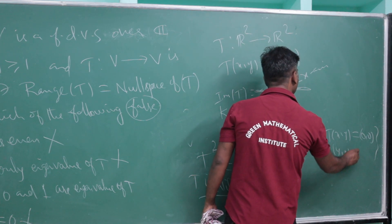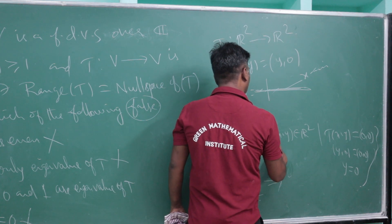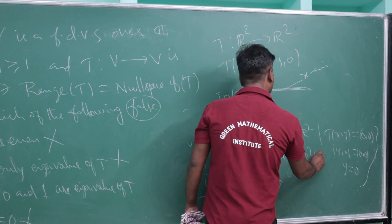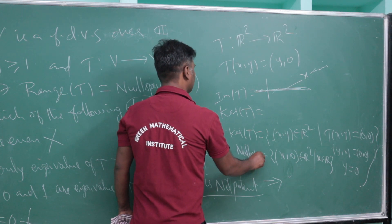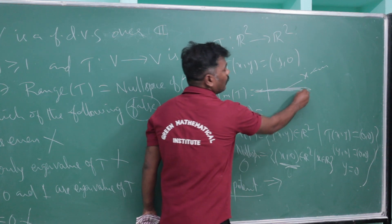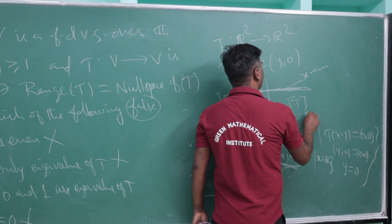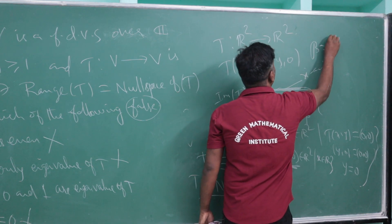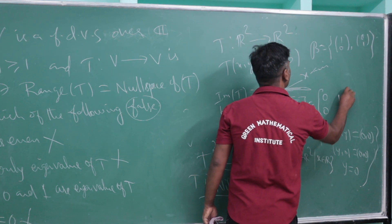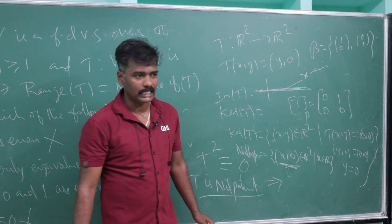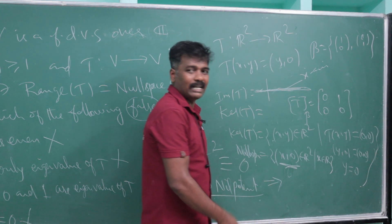The kernel of T is the set of all (x, y) in ℝ² such that T(x, y) = (0, 0), meaning (y, 0) = (0, 0), so y = 0. The kernel is {(x, 0) : x ∈ ℝ}, which is the x-axis. So the image equals the kernel. The matrix of T is [0, 1; 0, 0], an upper triangular matrix with eigenvalues 0 and 0.